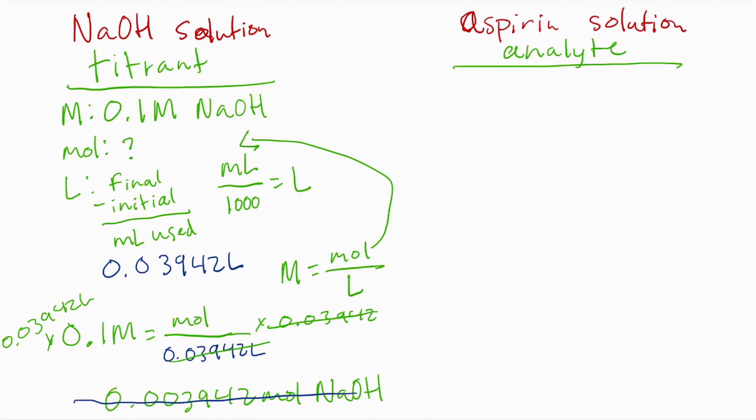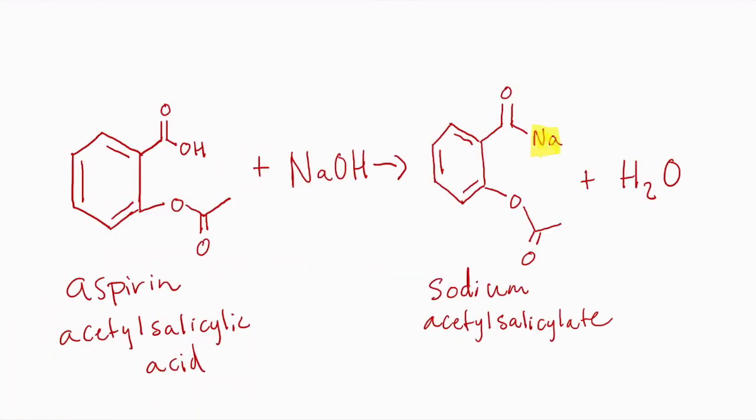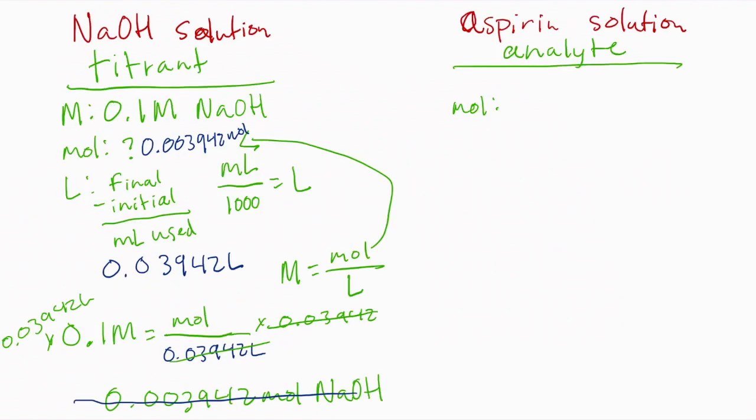So that should work out to 0.003942 moles of sodium hydroxide. Remember, this number should be different for everybody. Now, if we look back at our last slide, we said this was a one-to-one reaction. What that means is that every time we use one mole of sodium hydroxide, we're also going to use one mole of aspirin. So the moles of sodium hydroxide should equal moles of aspirin. We can use that same number right here.